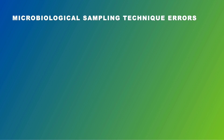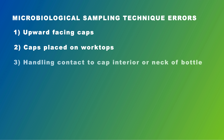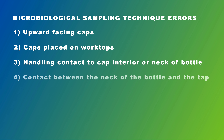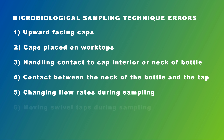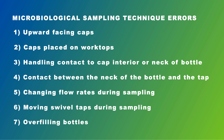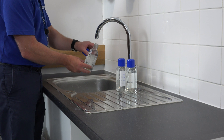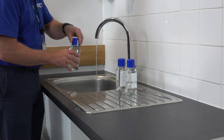In summary, you should avoid the following microbiological sampling technique errors: upward facing caps; caps placed on work tops; handling contact to the interior of the cap or to the neck of the sampling bottle; contact between the neck of the sampling bottle and the tap; changing flow rate during sampling; moving swivel taps during sampling; and overfilling bottles. Avoiding all of these technique errors, repeat the sampling process until all microbiological samples required at that tap have been taken.